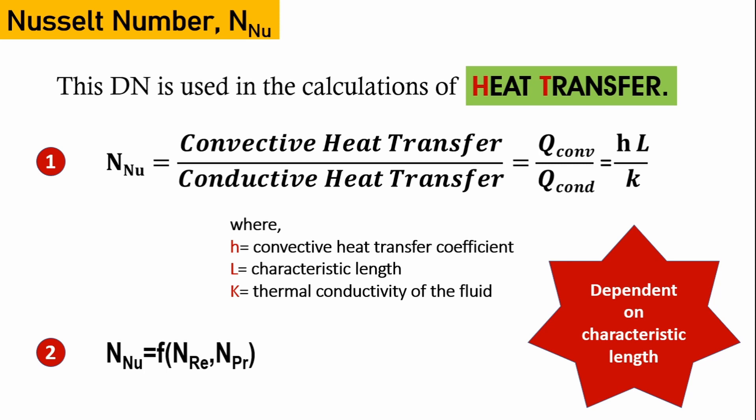The Nusselt number is dependent on two parameters: first, the type of fluid being dealt with, and second, the surrounding — meaning where the fluid is flowing. For example, is it flowing on a flat surface, through a tube, or across a sphere?